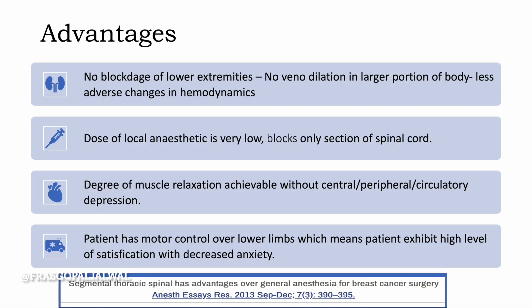What are the advantages? There is no blockage of the lower extremities, so no vasodilation in a larger portion of the body and less adverse hemodynamic effects. The dose of local anesthetic is very low since it blocks only a section of the spinal cord. A degree of muscle relaxation is achievable without central or peripheral circulatory depression, and the patient retains motor control over the lower limbs, which increases patient satisfaction and decreases anxiety.